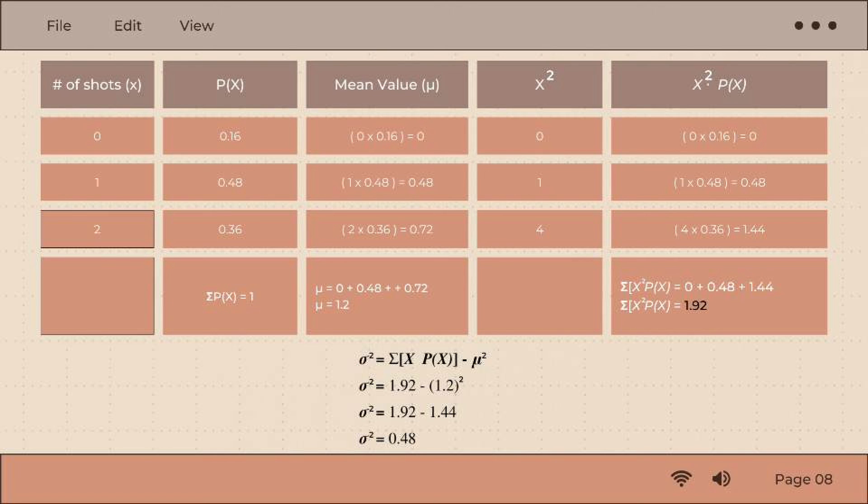Variance equals 1.92 minus 1.44. Then subtract. The variance is 0.48.